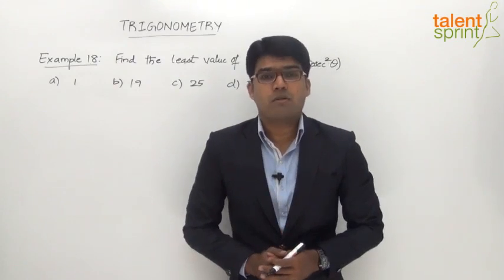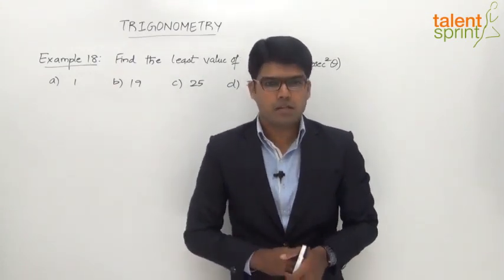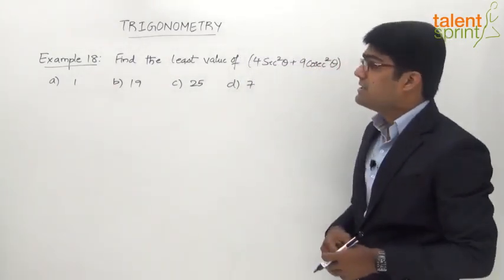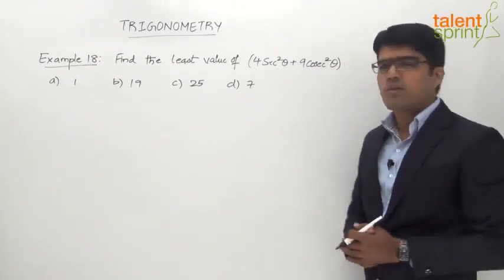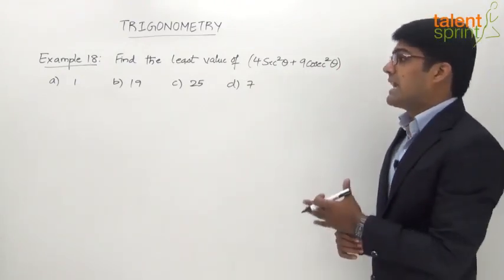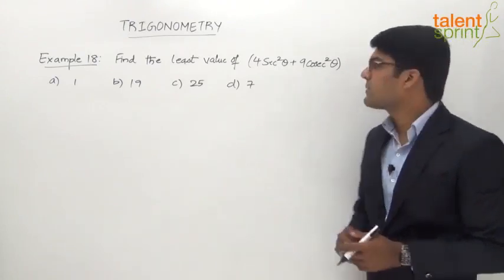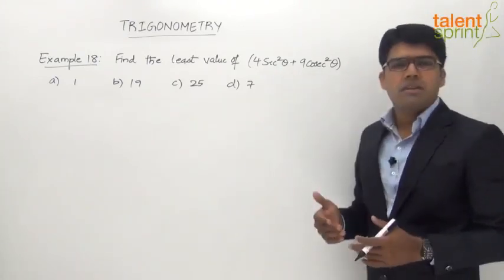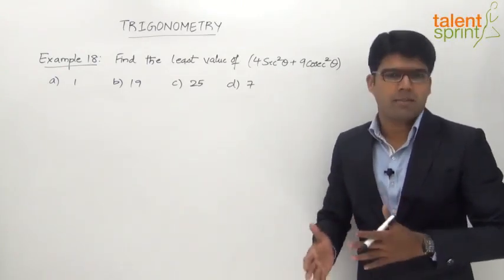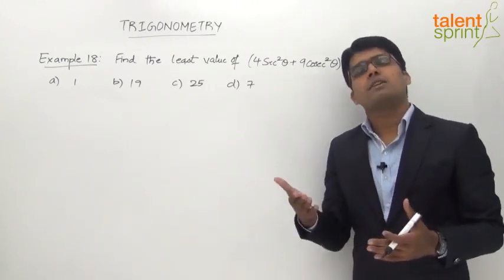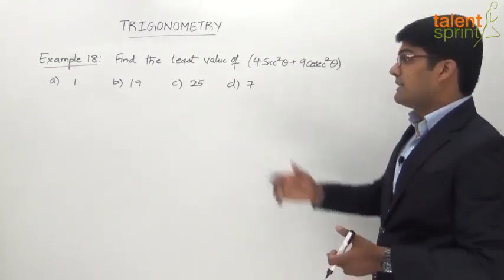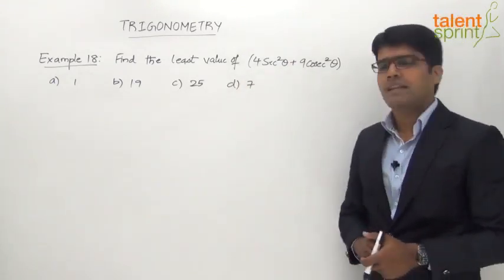Let us now look at another example on finding the minimum value of a trigonometric equation. This question is from one of the earlier SSC exams. Example 980 says: find the least value of 4sec²θ + 9cosec²θ. The answer options are 19, 25, and 7. Clearly this equation is not of the standard form, so we cannot apply the formula of ±√(a²+b²) to get the maximum or minimum value.